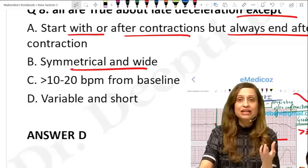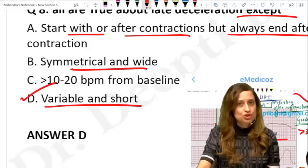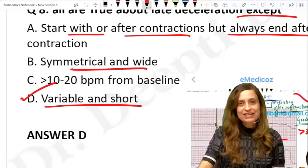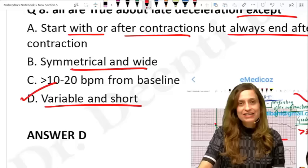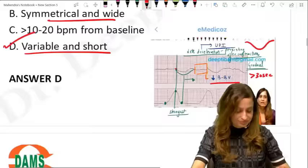There should be a fall of at least 15 beats per minute below the baseline. The best answer is option D — 'variable and short' — because late decelerations are actually wide, with a gradual fall and gradual pickup. The cause of late decelerations is uteroplacental insufficiency.